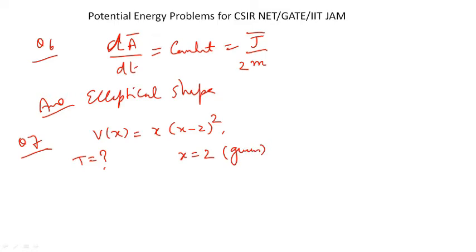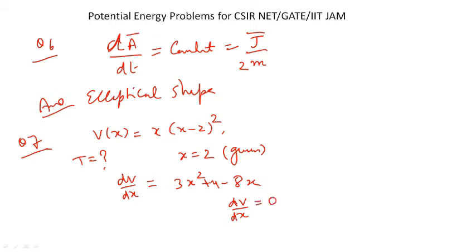We find dV/dx = 3x² - 8x + 4. Setting dV/dx = 0, we find x = 2 and x = 2/3 as equilibrium points. Since it is given that x = 2 is the stable equilibrium point, we focus on that condition.